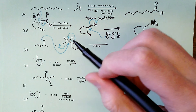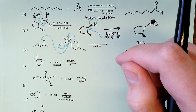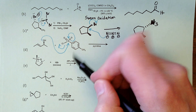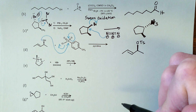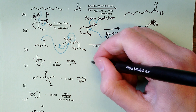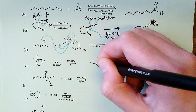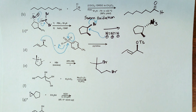Part e: with excess HBr, the ether is cleaved at both carbons. After protonation, a tertiary carbocation is generated and rapidly captured by excess bromide ion. The resulting primary alcohol is then protonated by the reaction conditions, and SN2 displacement of water by bromide ion gives the dibromo compound — cleavage of the tetrahydrofuran derivative.